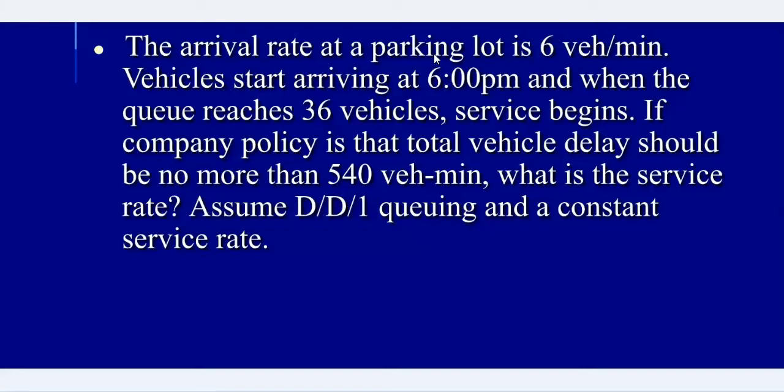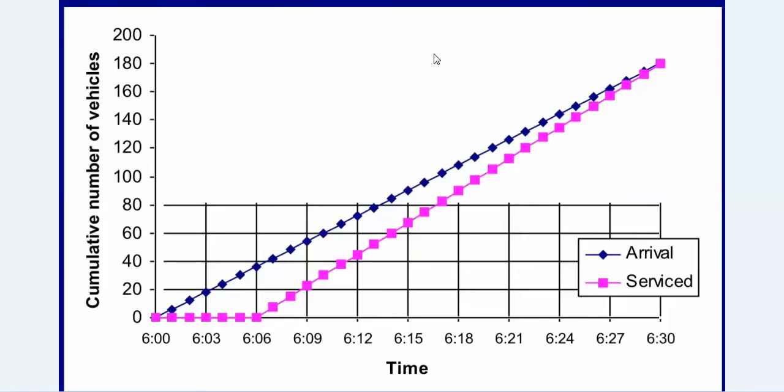The unknown is the service rate. By assuming D/D/1, we can draw this graph to solve the problem. The blue line is the arrival diagram and the purple one is the service diagram. If we want to not exceed 540 vehicle-minutes, it means that the area between these two diagrams should not exceed 540.